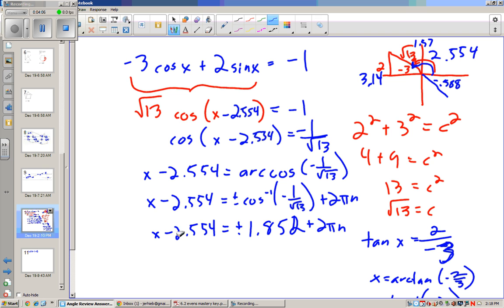So I have 1.8518. Now I'll add 2.554 to both sides. So add 2.554 to the positive, and I have 4.4.